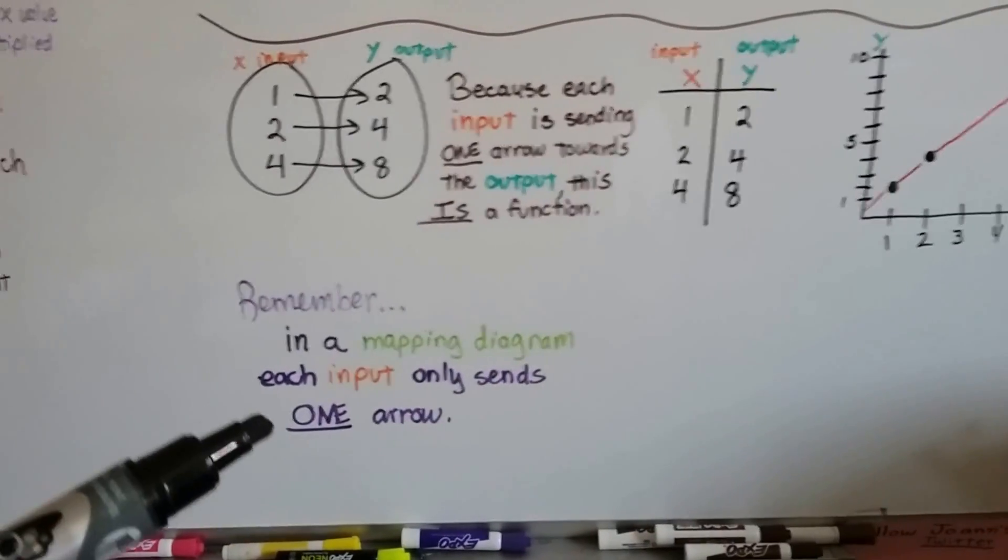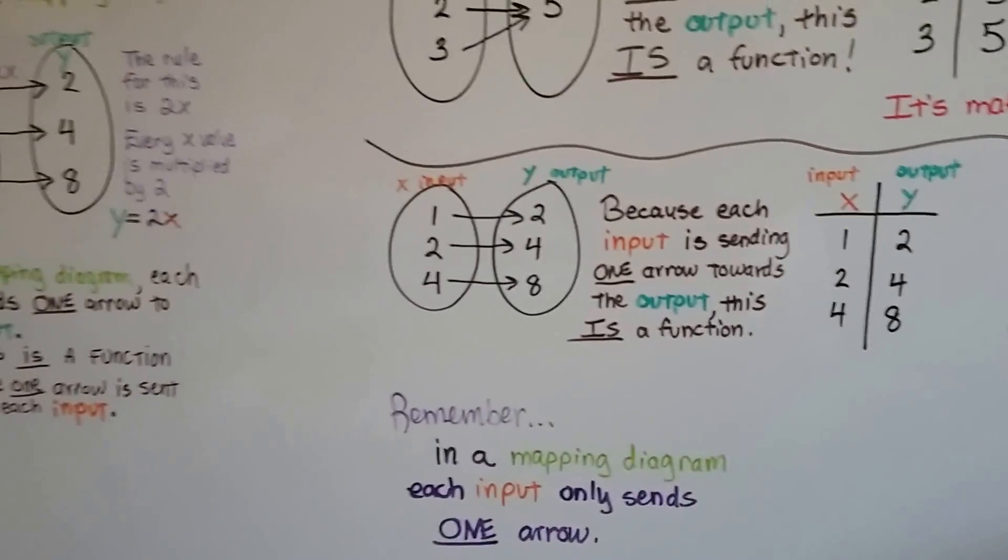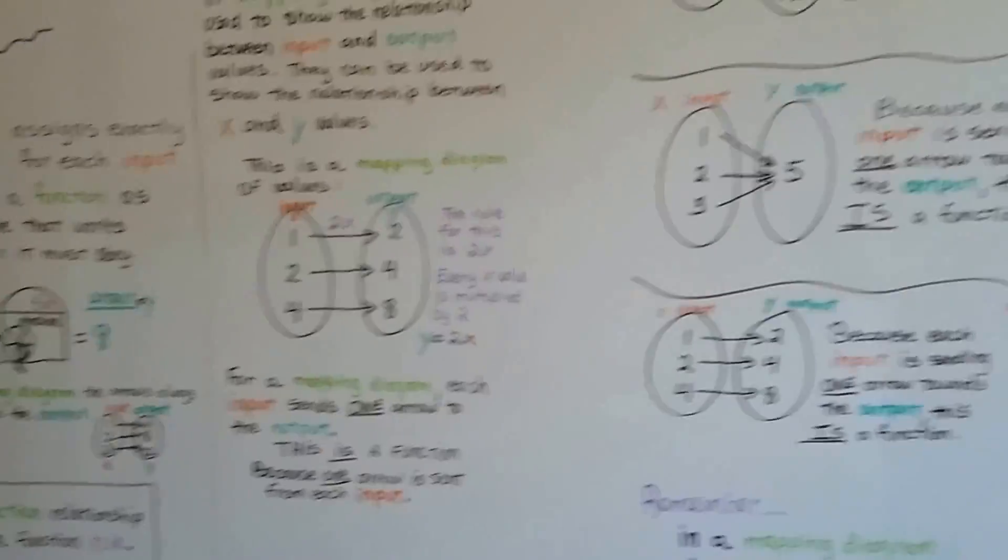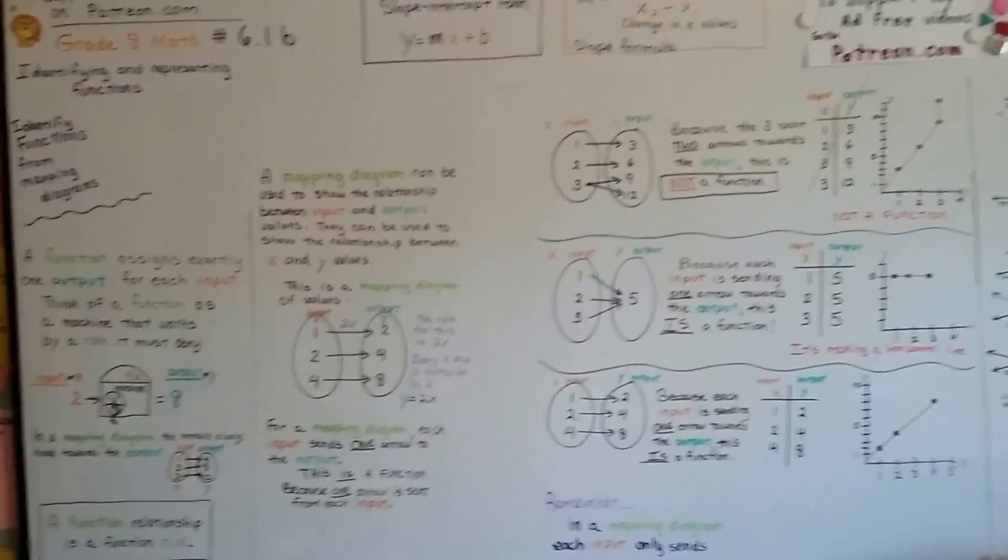So, remember, in a mapping diagram, each input only sends one arrow. Okay? And these are mapping diagrams. We're going to talk about the tables next and how to identify functions from tables.